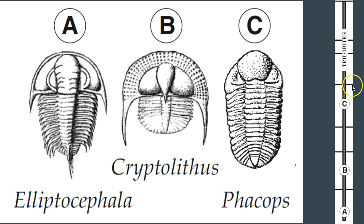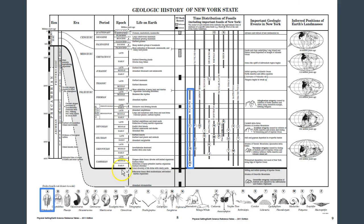We're zooming in on the bar graph for the index fossil distribution, and we can see A, B, and C. B is Cryptolithus - and you can see the evolution of life. These are all trilobites, and you can see the evolution of how they changed over time, probably to meet the needs of the environment. The trilobites came into existence towards the early Cambrian, and then they fizzled out or became extinct at the end of the late Permian. We have the beginning of the end of the Paleozoic era and the beginning of the Mesozoic where the trilobites became extinct - about 251 million years ago.